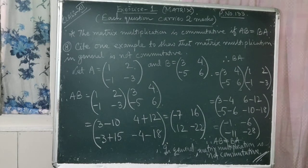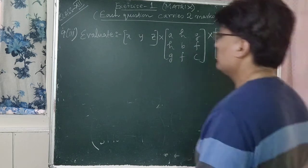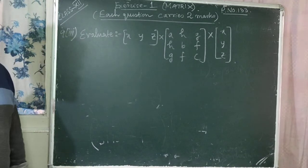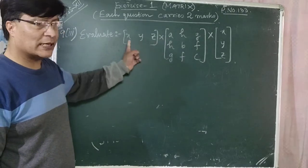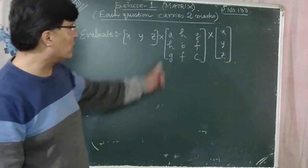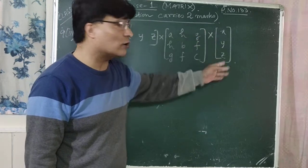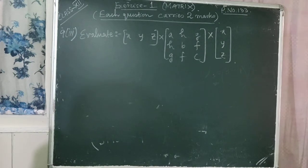Question number 9(3): evaluate [x, y, z] times [a, h, g; h, b, f; g, f, c] times column [x; y; z]. Can we multiply the first two matrices? First matrix has 3 columns, second matrix has 3 rows — they are equal, so multiplication is possible. Multiplying row by column: first row times first column gives ax + hy + gz. First row times second column: hx + by + fz. First row times third column: gx + fy + cz.